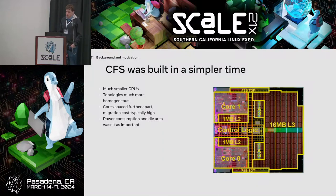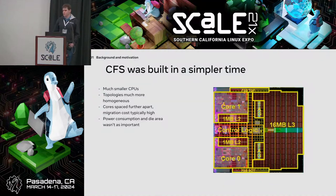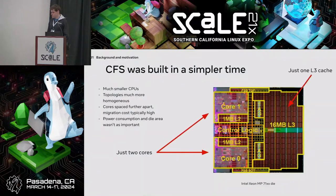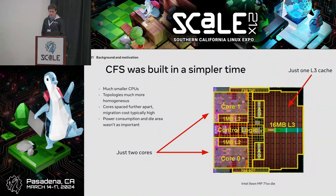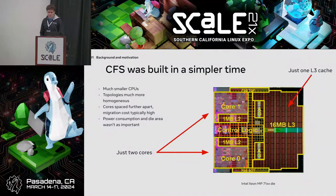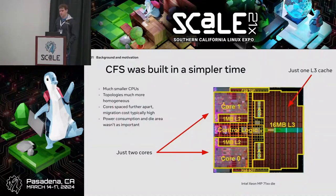The history here is pretty important because it dictates a lot about the structure of CFS and Linux scheduling in general. This is a 2007-era top-of-the-line server CPU with all of its two cores. What you notice is there are two cores, one L3 cache, and the topology is pretty homogeneous — just two cores with no NUMA properties. The migration latency, the cost of communicating between cores, was fairly high at this time. So a lot of what scheduling was developed around was keeping everything local — stuff should run on a single core and stay on that core, and periodically you can do load balancing.